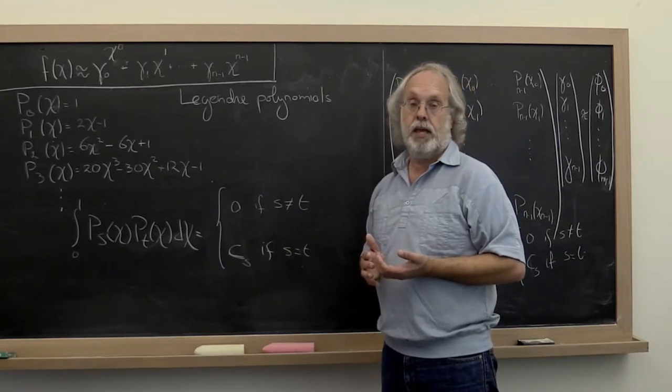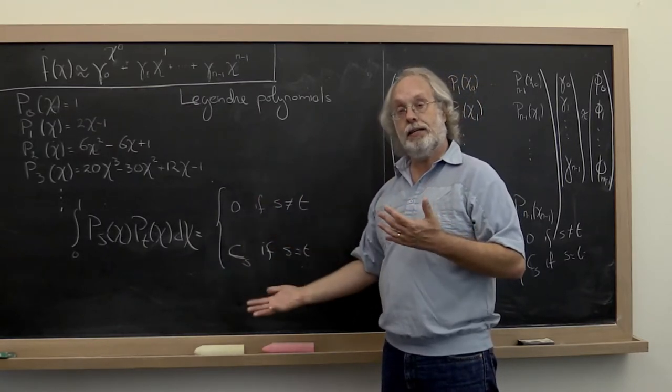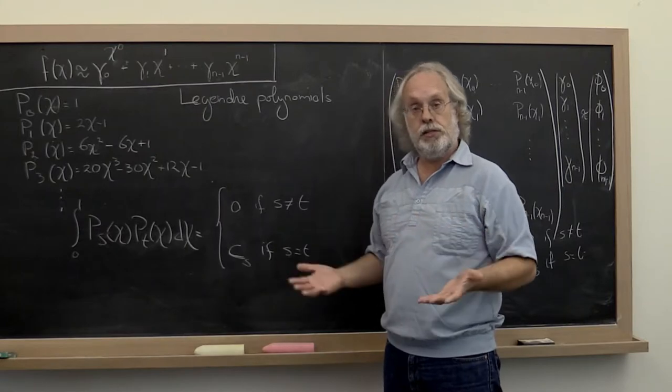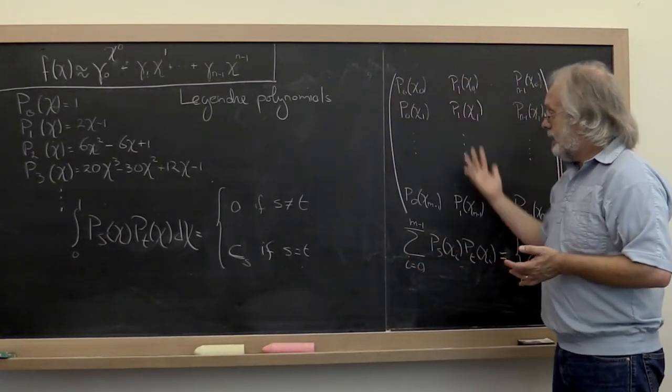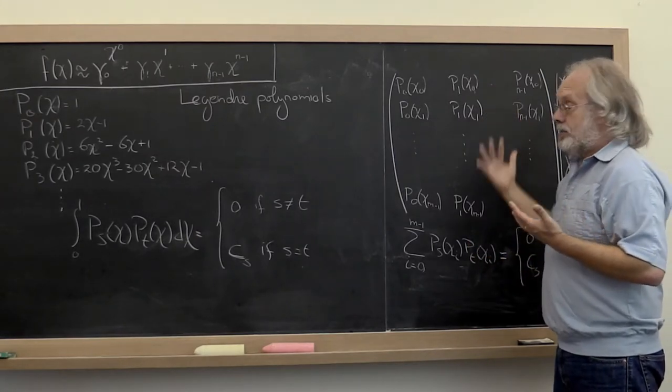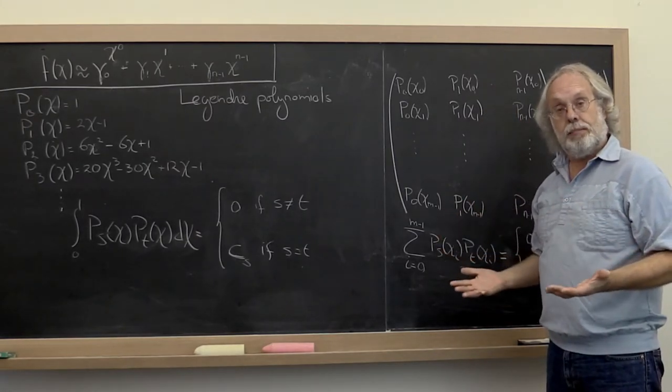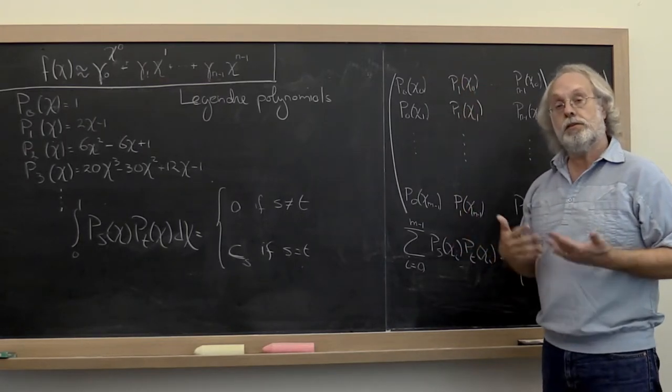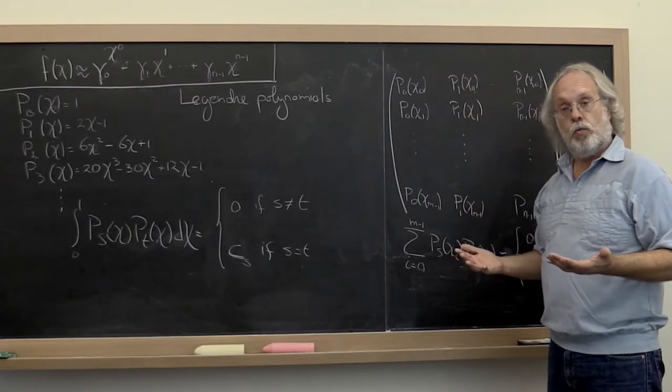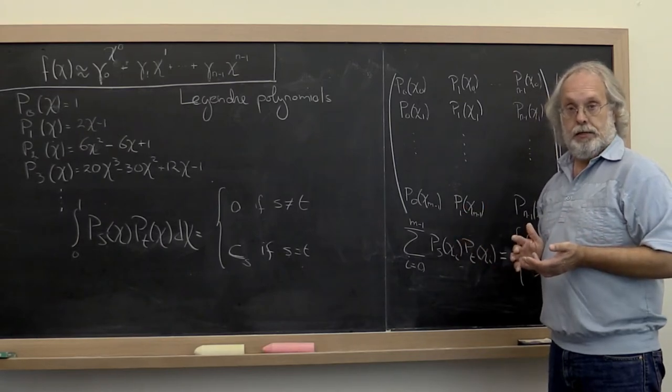then when you translate that into the linear system that needs to be solved, ideally that linear system exhibits the same kind of orthogonality. In this case, the columns of the matrix that came out were approximately linearly independent.